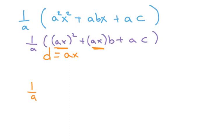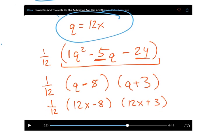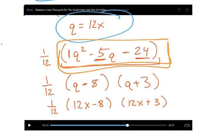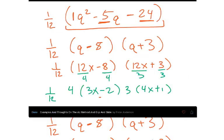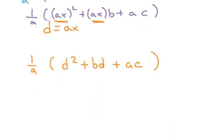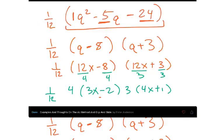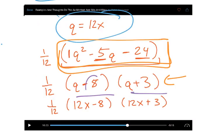So I can say 1 over a times d squared plus bd plus ac. And from here, let's see what happened. So if we look at this example, from here, we created a situation right here that is very easy to factor into such. And this was the benefit of the slip and slide method.